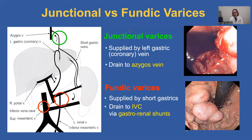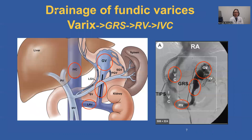Junctional and fundic varices also differ in their blood supply and drainage. Junctional varices are supplied by the left gastric or coronary vein and drain to the azygous vein. Fundic varices, by contrast, are supplied by the short gastric veins, which are to the left of the left gastric vein, and these drain to the IVC via gastro-renal shunts. There is very high flow in these gastro-renal shunts. The drainage of fundic varices is via gastro-renal shunts to the left renal vein and then to the IVC.